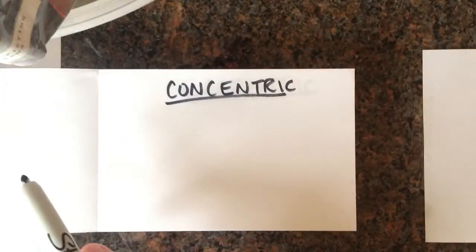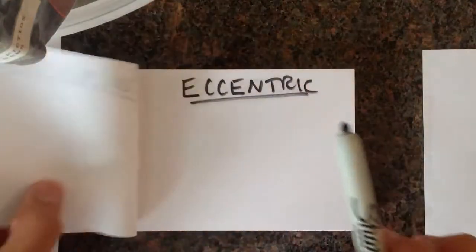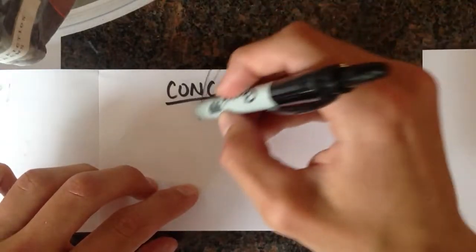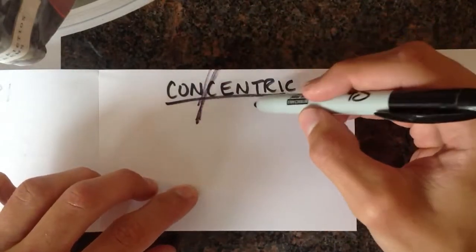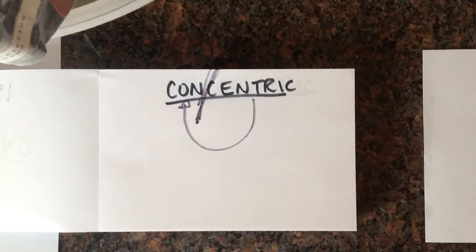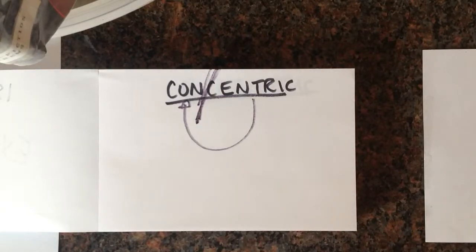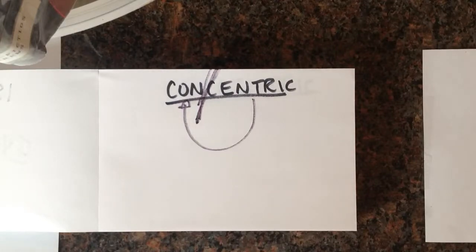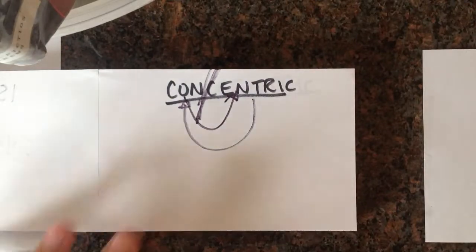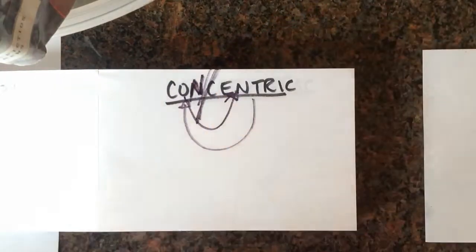Now within isokinetic, you have concentric and you have eccentric. So concentric — I love splitting up the word because the word tells us what it means. 'Con' means 'with,' so this is going to be 'with a center' — with a common center.